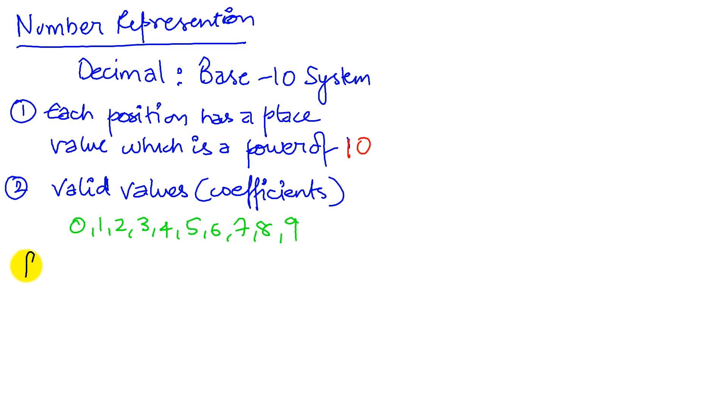So for example, when I look at a number like 4723 in base-10, we simply write it this way. Each of these positions, so we have 4, 7, 2, and 3. And 3 has a place value which is 10 to the 0.